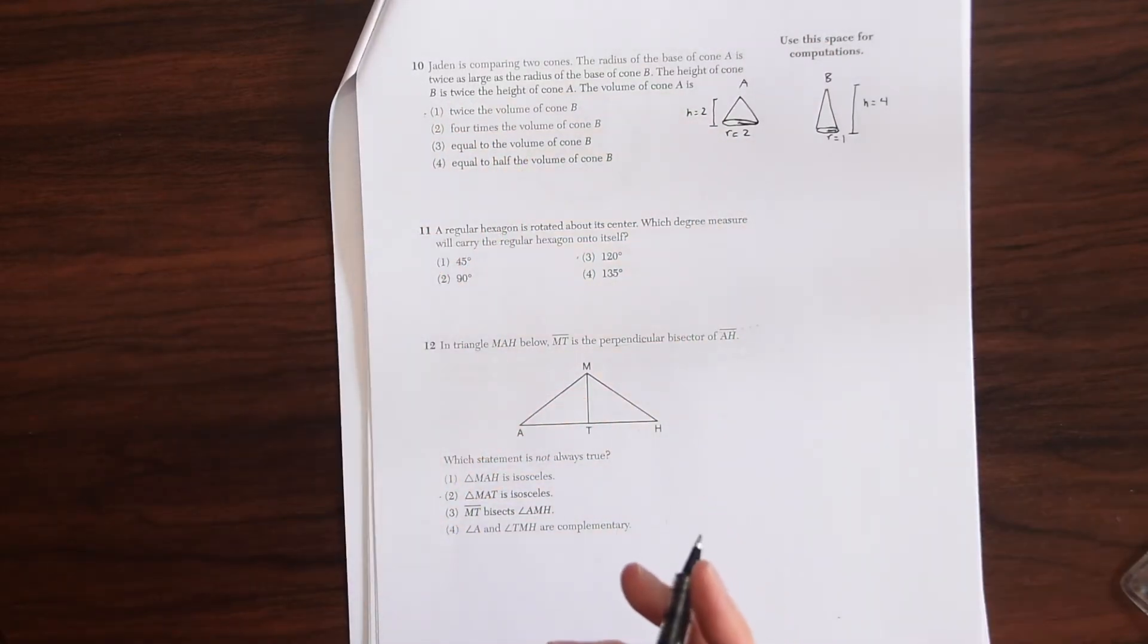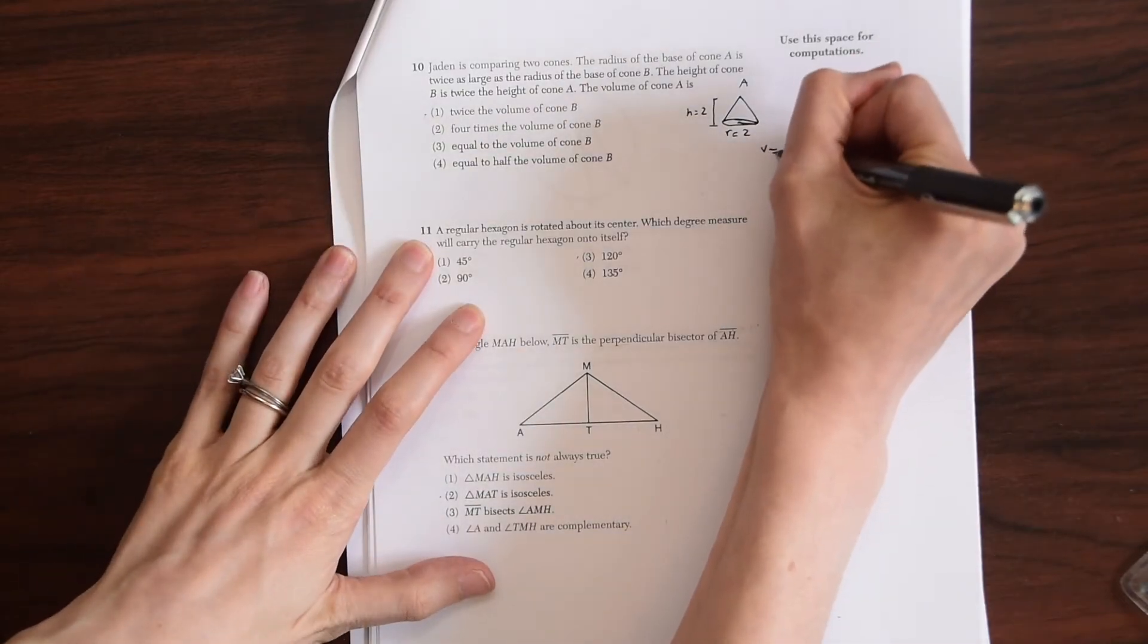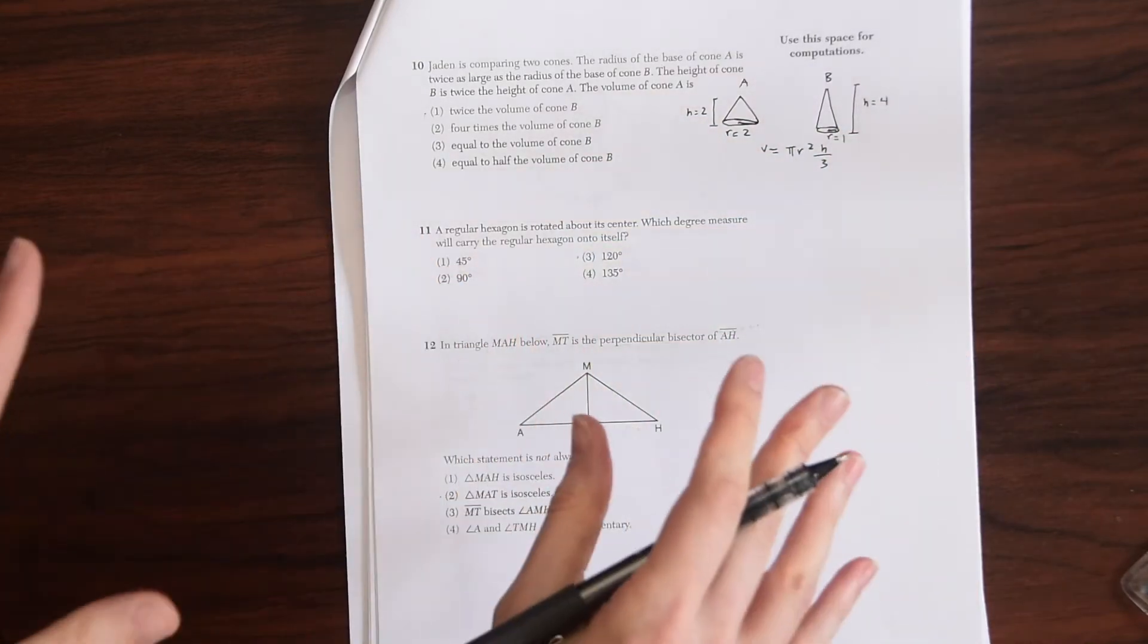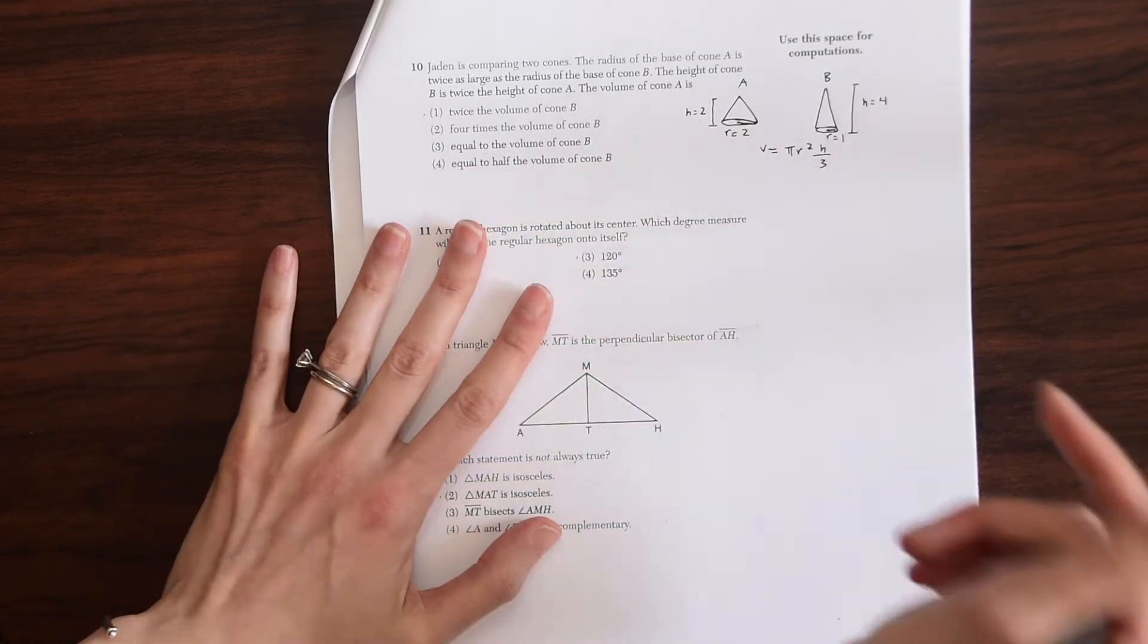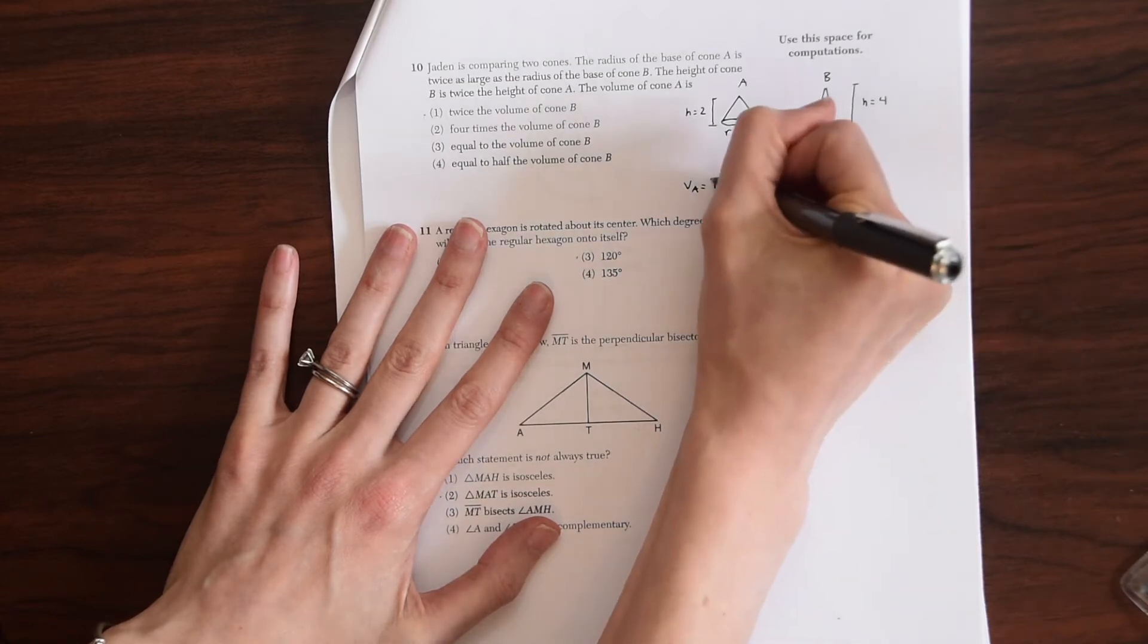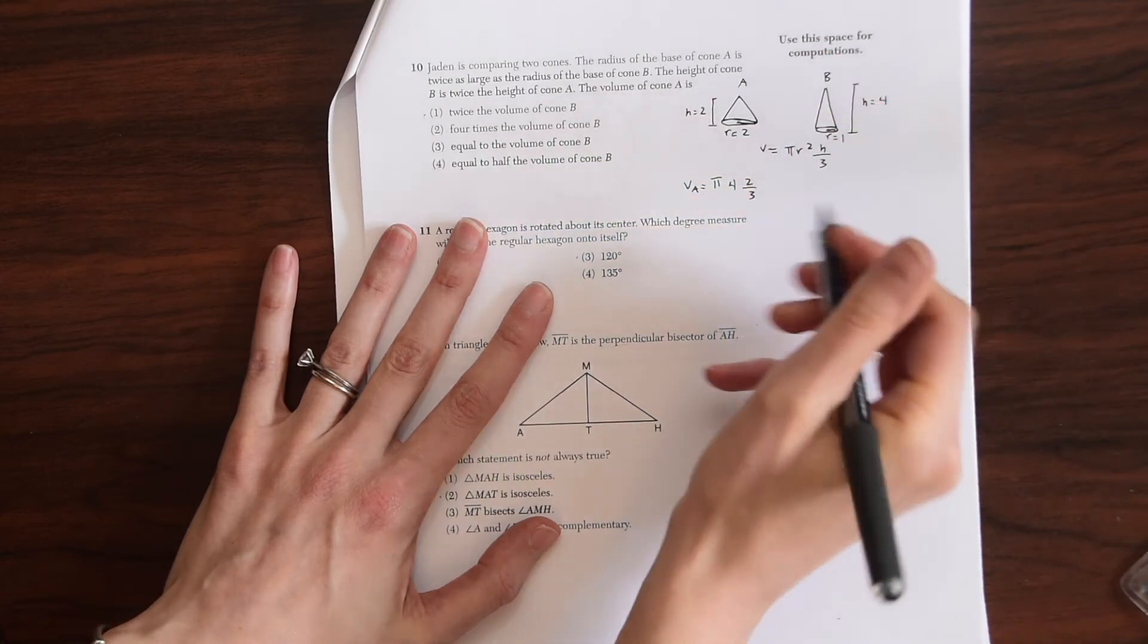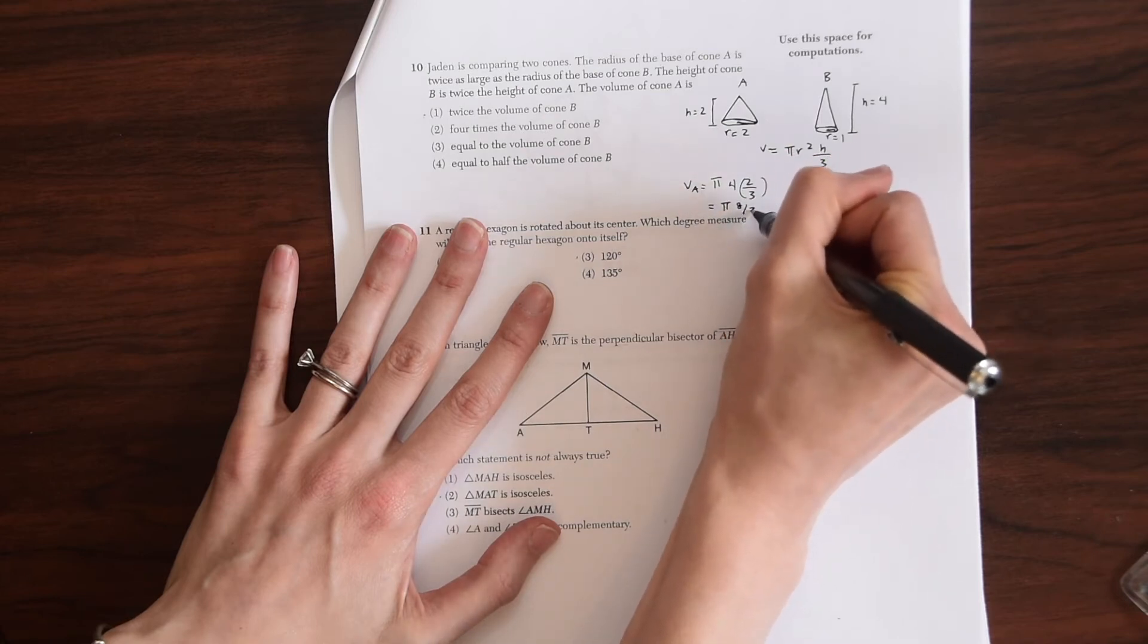So now we need to remember what the volume of a cone is. So let's just write that volume of a cone is pi r squared times h over three. So now let's try to find the volume of A and the volume of B and see the difference. So we have volume of A, so this is equal to pi r squared. So two squared is four times h two over three. So this will give us pi times eight over three.